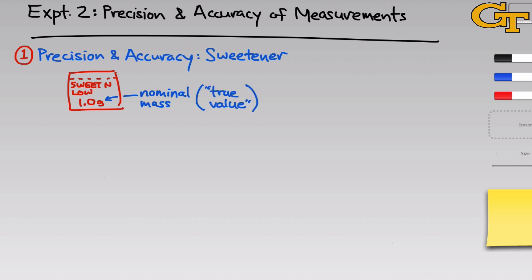For our purposes, we're going to use the nominal mass as the true value. Because if the manufacturer is doing their job right, the distribution of masses of sweetener within packets should be centered on 1.0 grams — in other words, the mean of a bunch of packets of sweetener should be 1.0 grams.